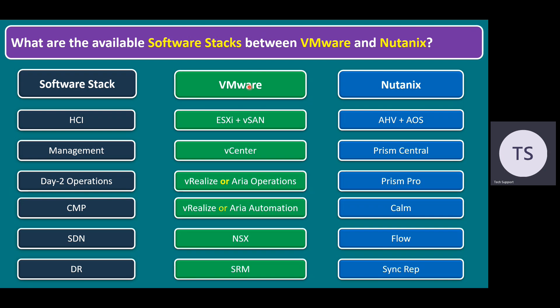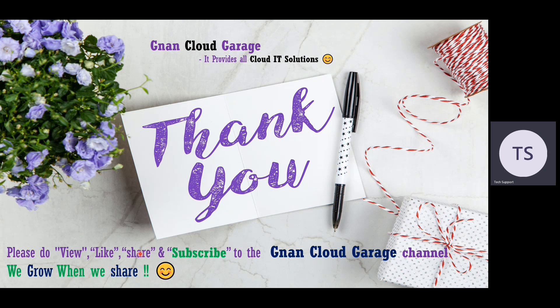This covers the main differences between software stack names in VMware and the equivalent product names in Nutanix. If you want to compare product features between VMware and Nutanix, this high-level overview covers hyper-converged infrastructure, management, day two operations, cloud management platform, software-defined networking, and disaster recovery solutions. Thank you. If you are watching this video for the first time, please like, share, and subscribe to the Gnan Cloud Garage channel. If you are already subscribed, I appreciate all your support. Bye for now.